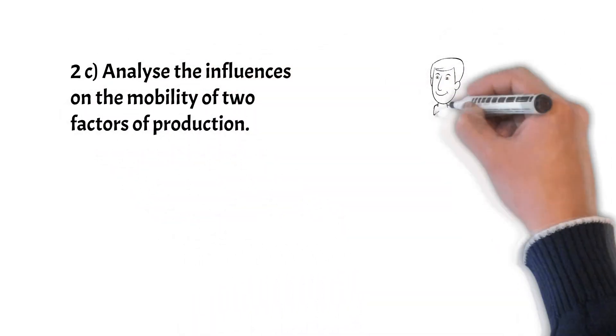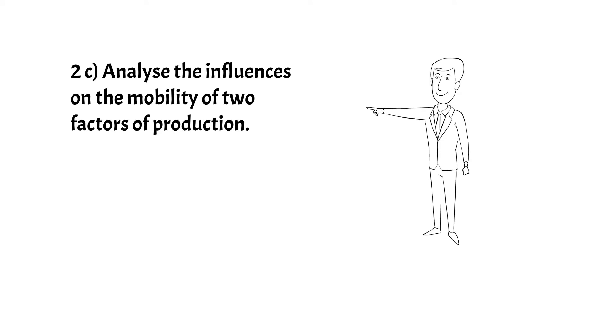Okay, now question 2c: analyze the influences on the mobility of two factors of production. What the examiner is after here—well, how does mobility affect factors of production? They are only after two factors of production from capital, enterprise, land and labor. Mobility would mean the availability of proper infrastructure to move from place to place, for example trains and roads, and whether it is affordable or not. Cost of living differences might mean whether workers can afford to move to another place, for example housing costs and cost of education for this labor. Also we could mention the availability of information on jobs elsewhere. Another issue is tax rate changes. Lower tax rates could encourage workers to be more occupationally mobile.